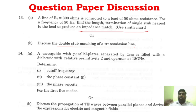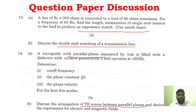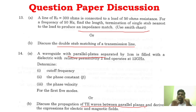Unit 4 — parallel plates with TE and TM waves between parallel plates, circular waveguides and rectangular waveguides. There are questions about wave propagation types between parallel planes in the transmission medium.